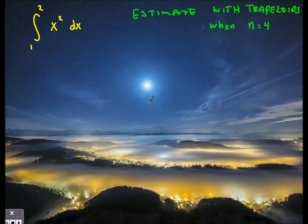I want to approximate the integral from 1 to 2 of x squared with respect to x. I want to estimate this with trapezoids when n equals 4. n is the number of trapezoids. First thing I have to do is figure out the h value. The h value comes from the formula b minus a over n. In this case, b is 2 minus a is 1, divided by n, 4. You get an h value of one fourth.